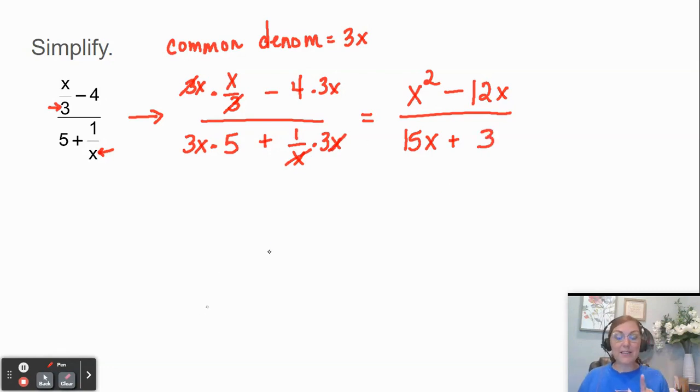Now what I did there, recognize what I did by multiplying by the would-be common denominator, I got rid of those smaller fractions. Now I'm dealing with one fraction.